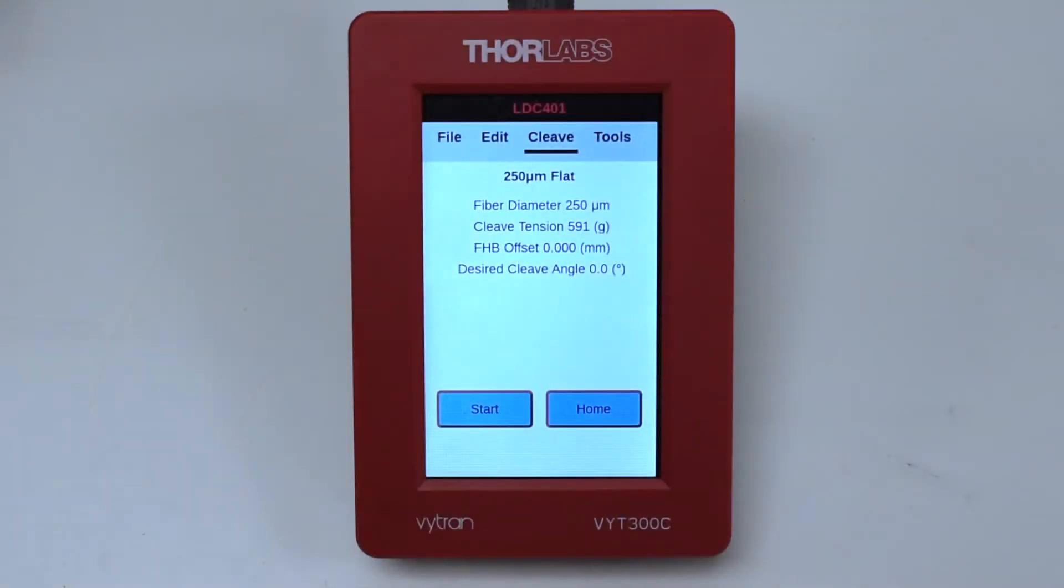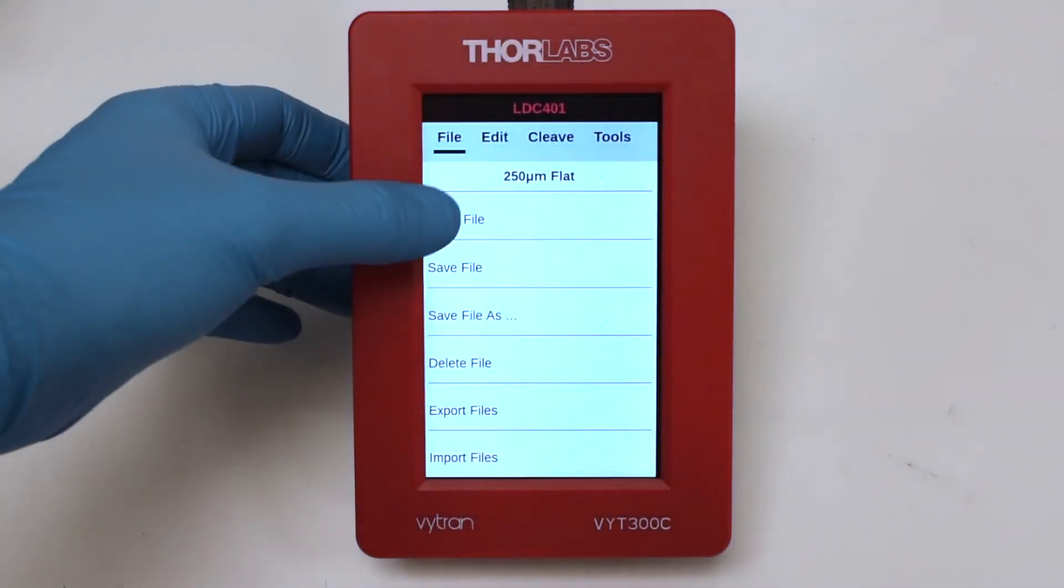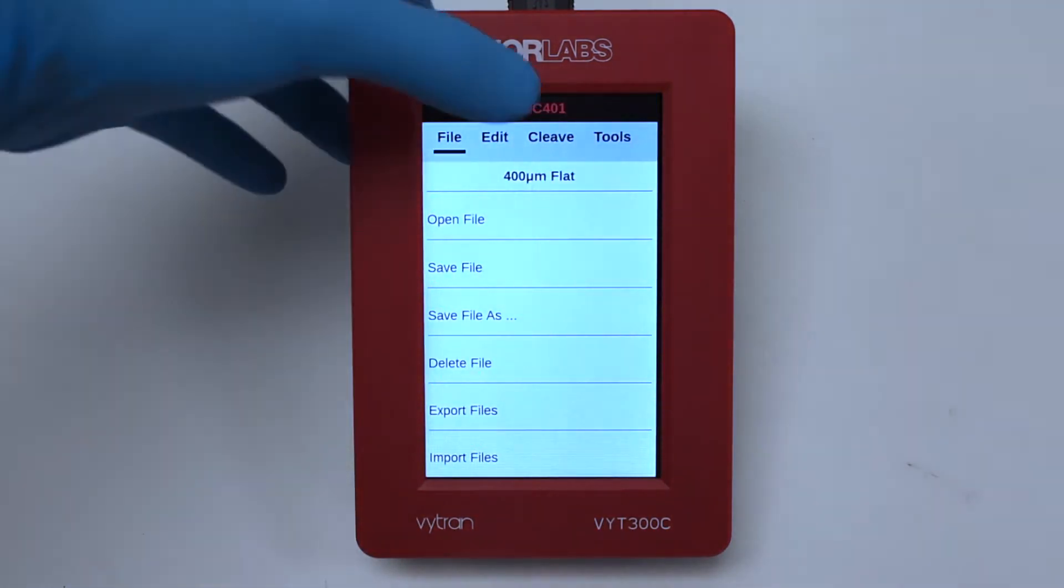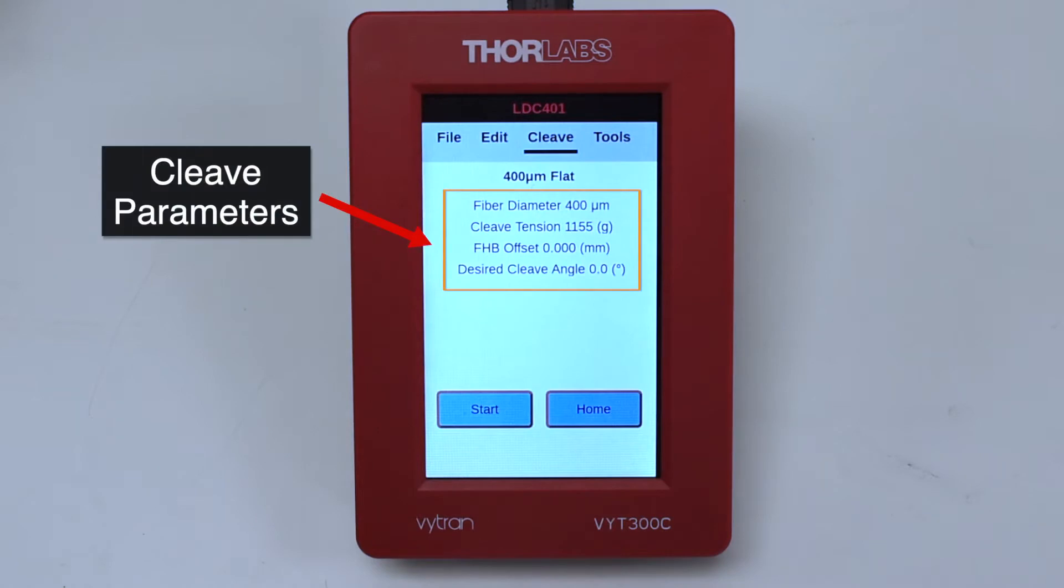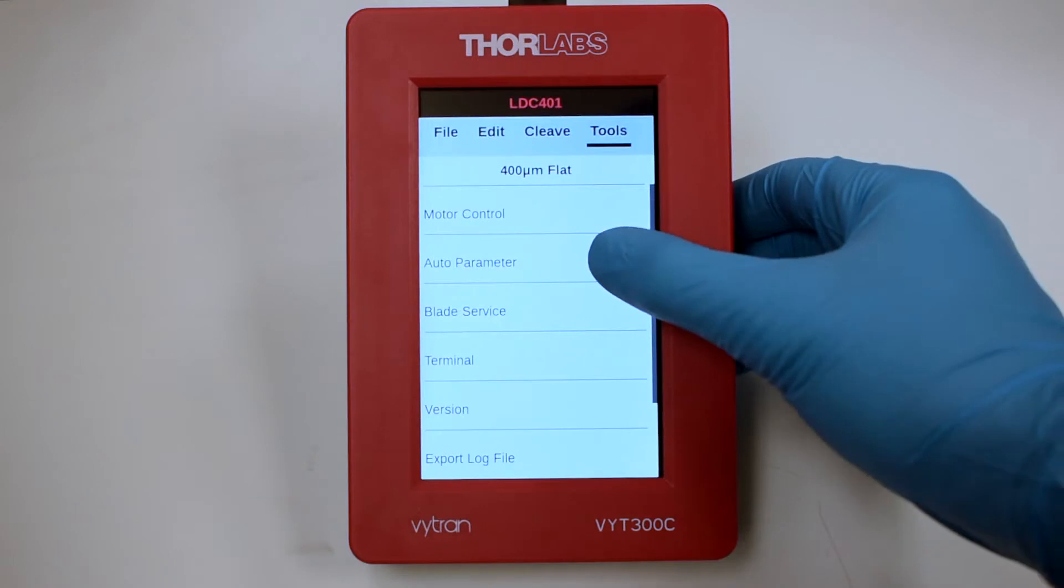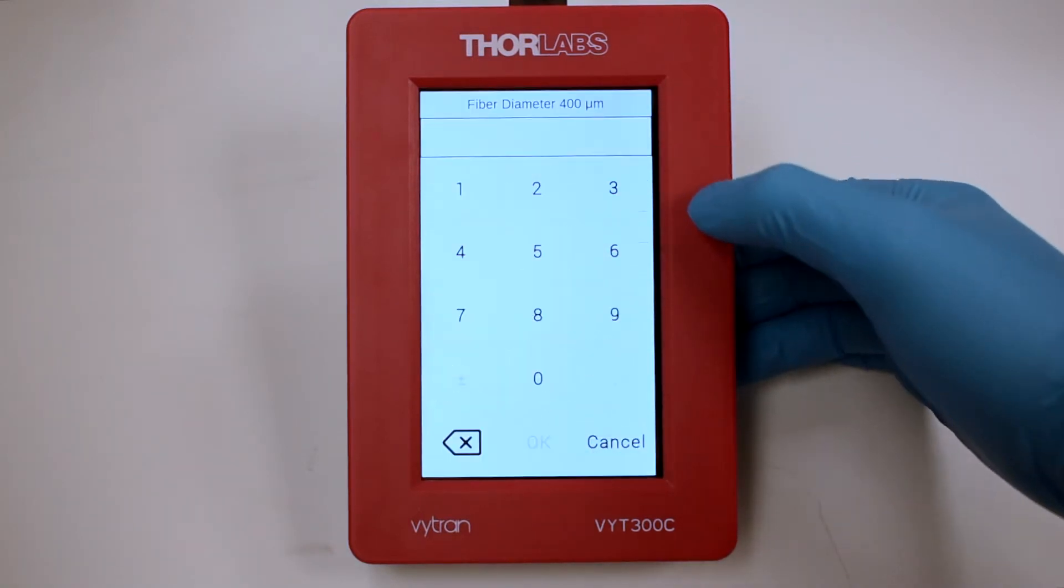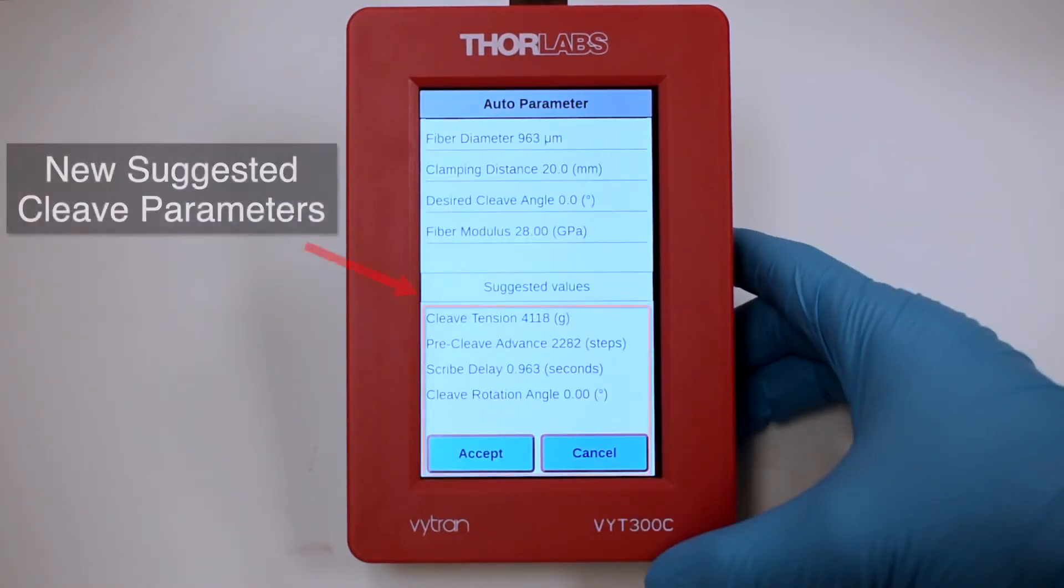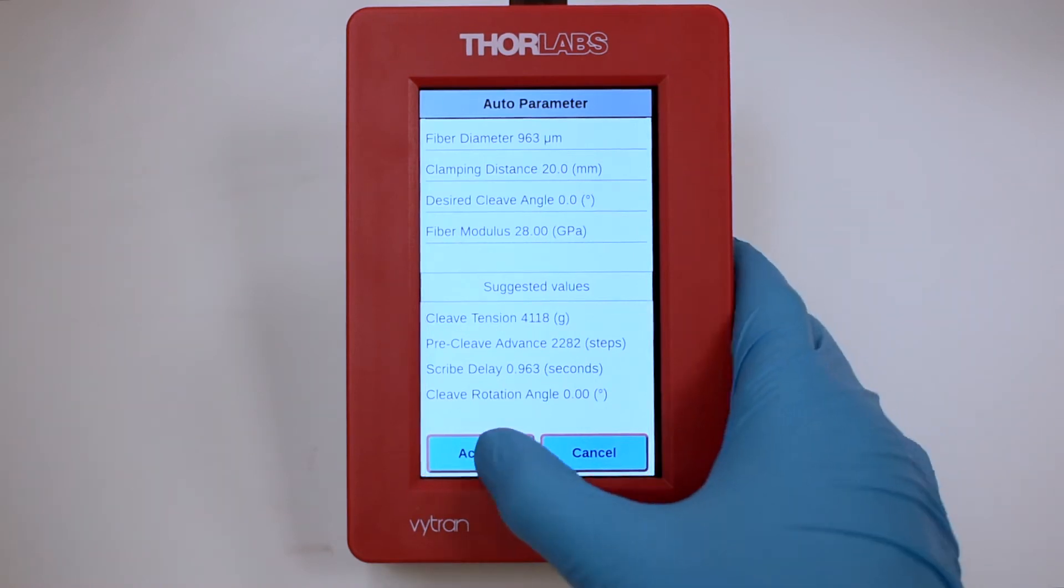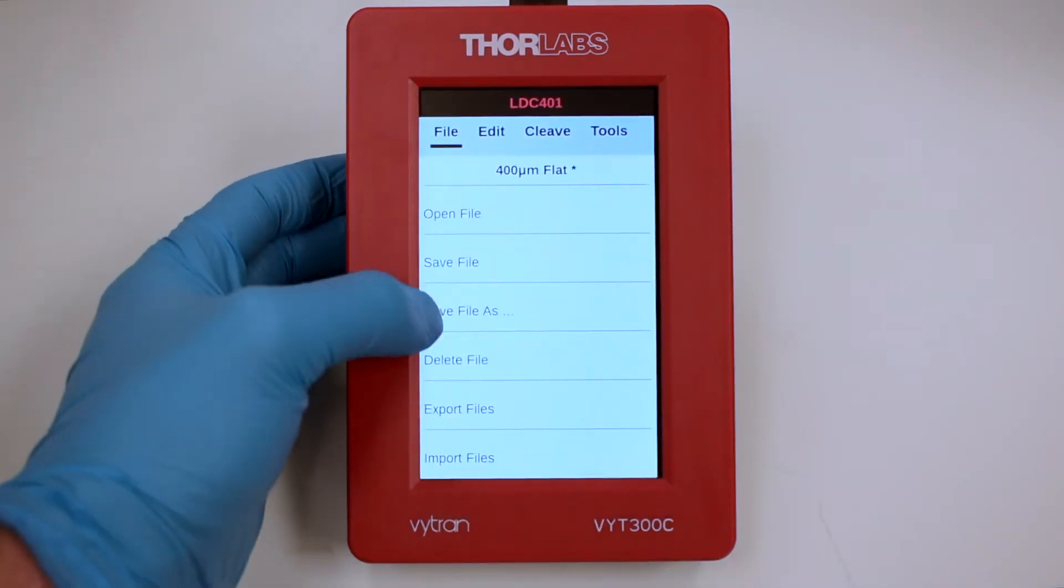Use the handset controller to open the appropriate cleave file. Or, if you are using a non-standard fiber, use the auto parameter tool to suggest parameters and save as a new file.